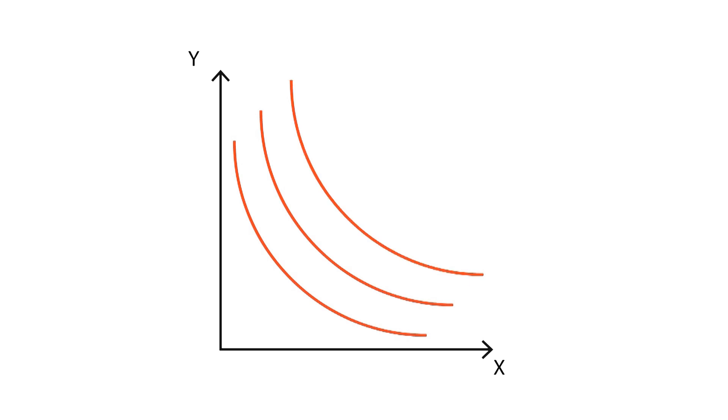A graph showing different combinations of indifference curves is known as an indifference map. However, not all indifference maps are the same, since the indifference curves may have different shapes.